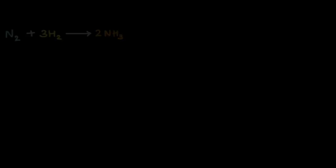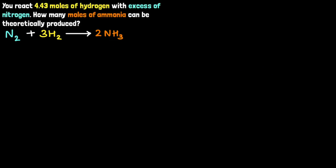As a chemist, your goal is to produce some ammonia, and you decide to use this chemical reaction to do that. Ammonia is useful in making fertilizers, for example, to improve crop yields. Suppose you react 4.43 moles of hydrogen with excess nitrogen — meaning you have a lot of nitrogen but only limited quantities of hydrogen, only 4.43 moles. The question is: how many moles of ammonia can be theoretically produced?